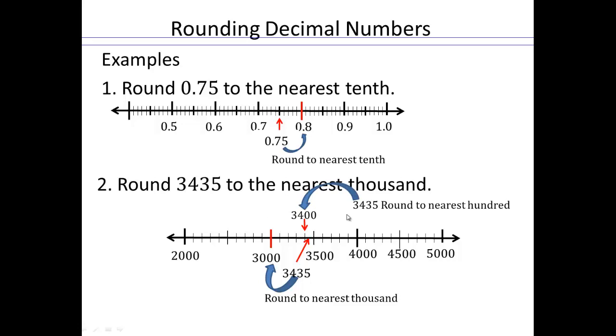What if I ask you to round to the nearest hundred? Then which hundred is closer to 3,435? 3,400 or 3,500? And you can see that it's going to be 3,400.